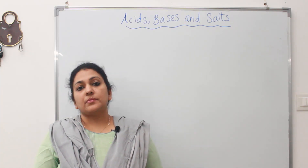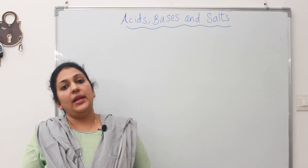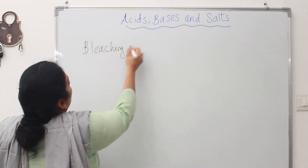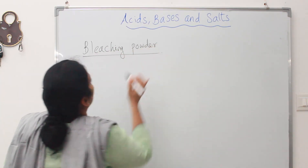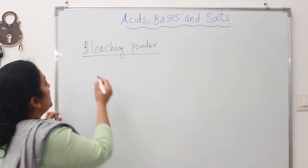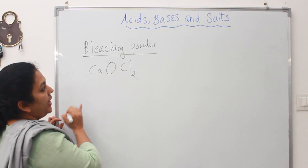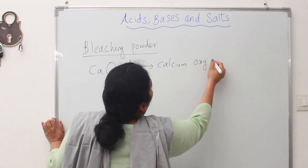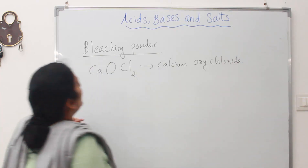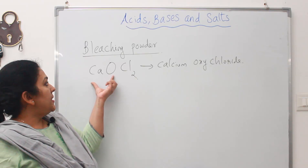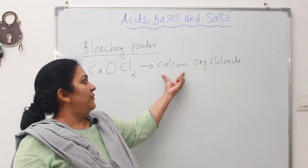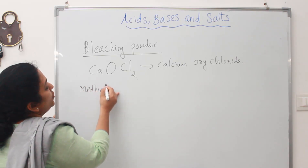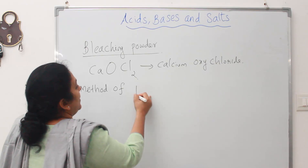Today we are going to discuss some other salts. The first one is bleaching powder. Bleaching powder has the chemical formula CaOCl₂. The chemical name is calcium oxychloride.